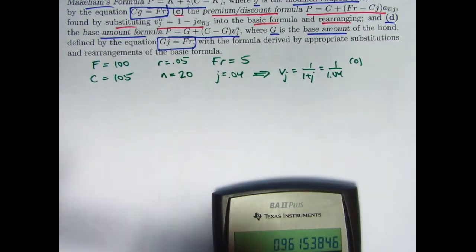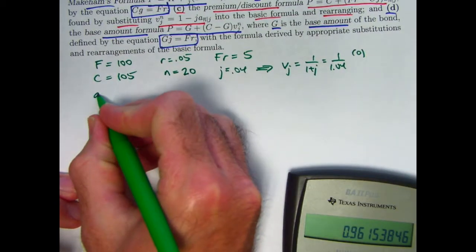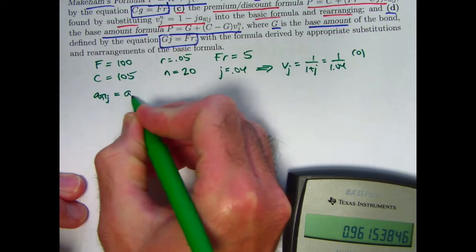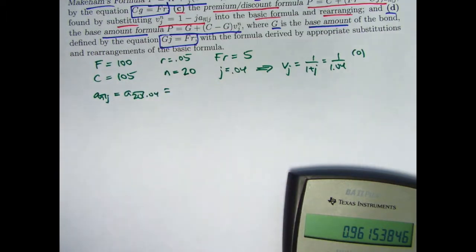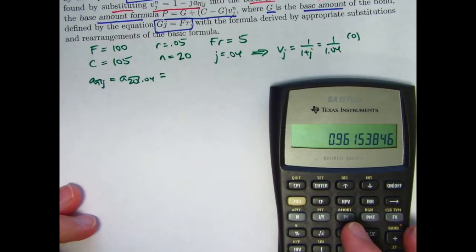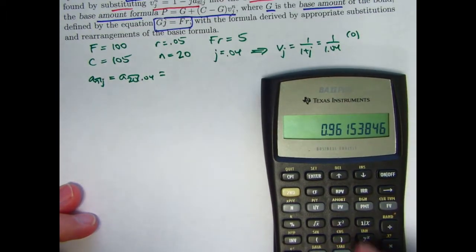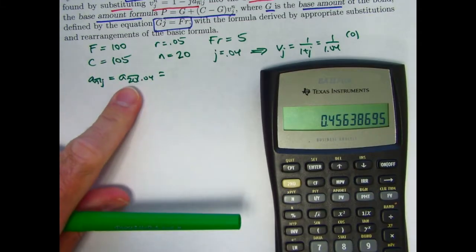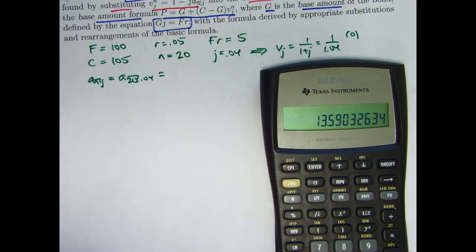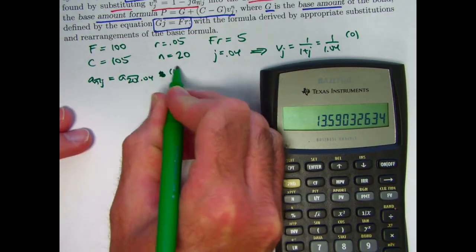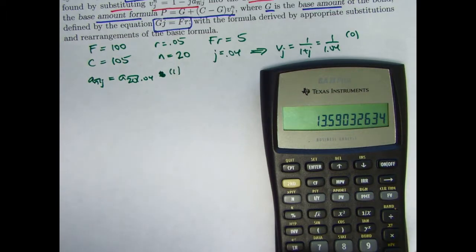What else do we need to know? We need to know A_NJ, which would be A_20 at .04, which we can calculate from our memorized formula using V. Raise that to the 20th power. Subtract from 1. Divide by 0.04. Looks like AN is about 13.59. You might want to write that down. I will store this in register 1. I'm not bothering writing it down. Store 1.